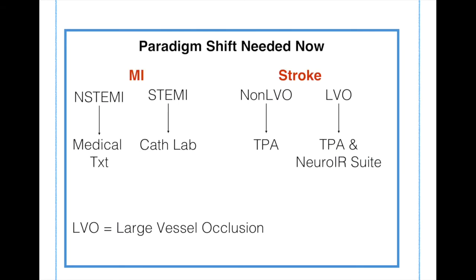Now we have to discuss the paradigm shift. If a stroke is an LVO — large vessel occlusion — there's a big clot in a big artery. These patients should get TPA and go to the neuro IR suite right away, just like an ST-elevation MI goes to the cath lab. Non-ST-elevation MIs go for medical treatment, and non-large-vessel occlusions go to just TPA.